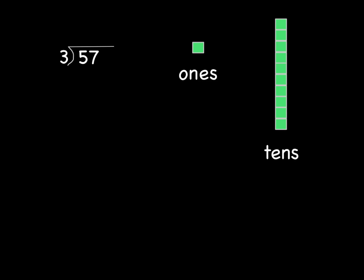We're going to use base 10 blocks to model long division. In this particular problem, we have a two-digit number, 57. That means it has tens and ones, so we're going to need tens and ones blocks in order to build 57.